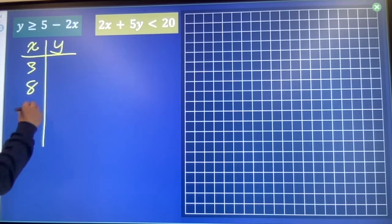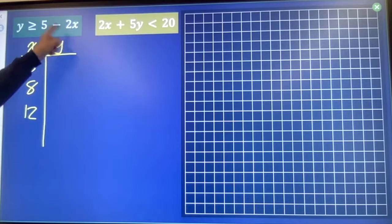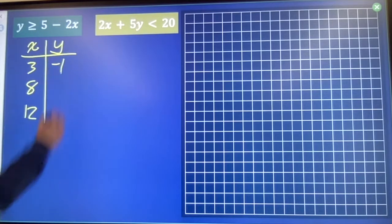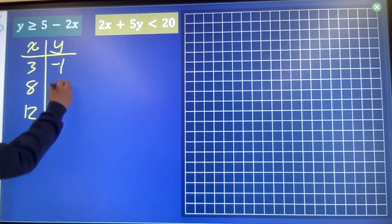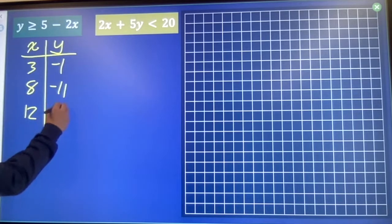3, 8, 12. Solve for y. 2 times 3 is 6. 5 minus 6 is negative 1. 2 times 8 is 16. 5 minus 16 is negative 11. 2 times 12 is 24. 5 minus 24 is negative 19.